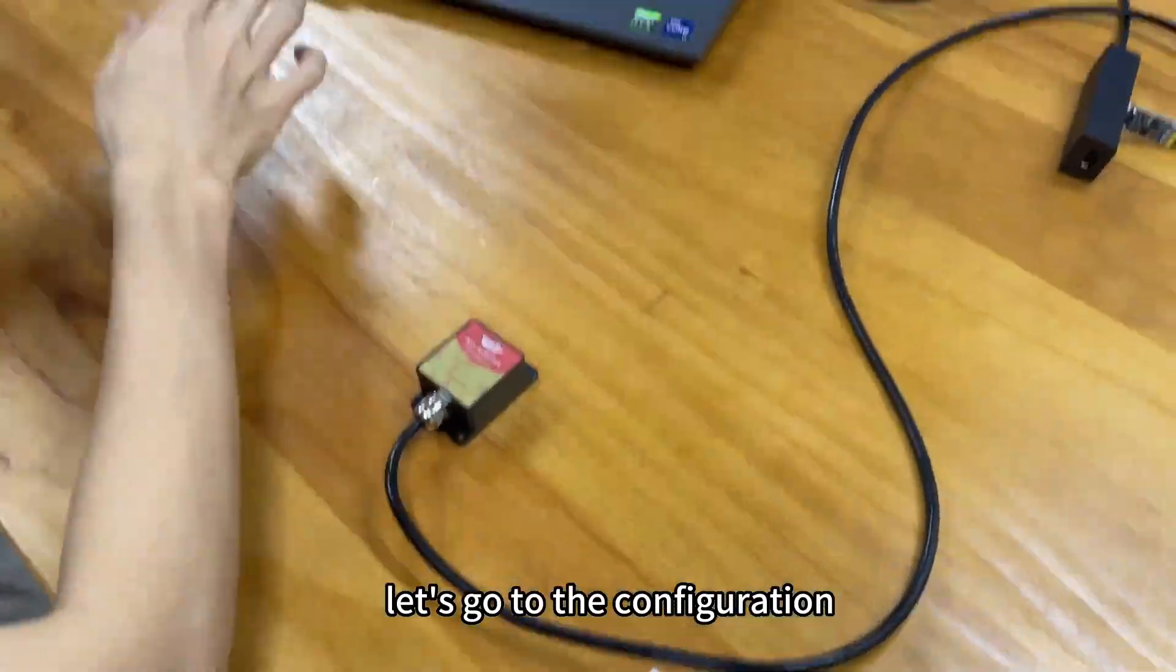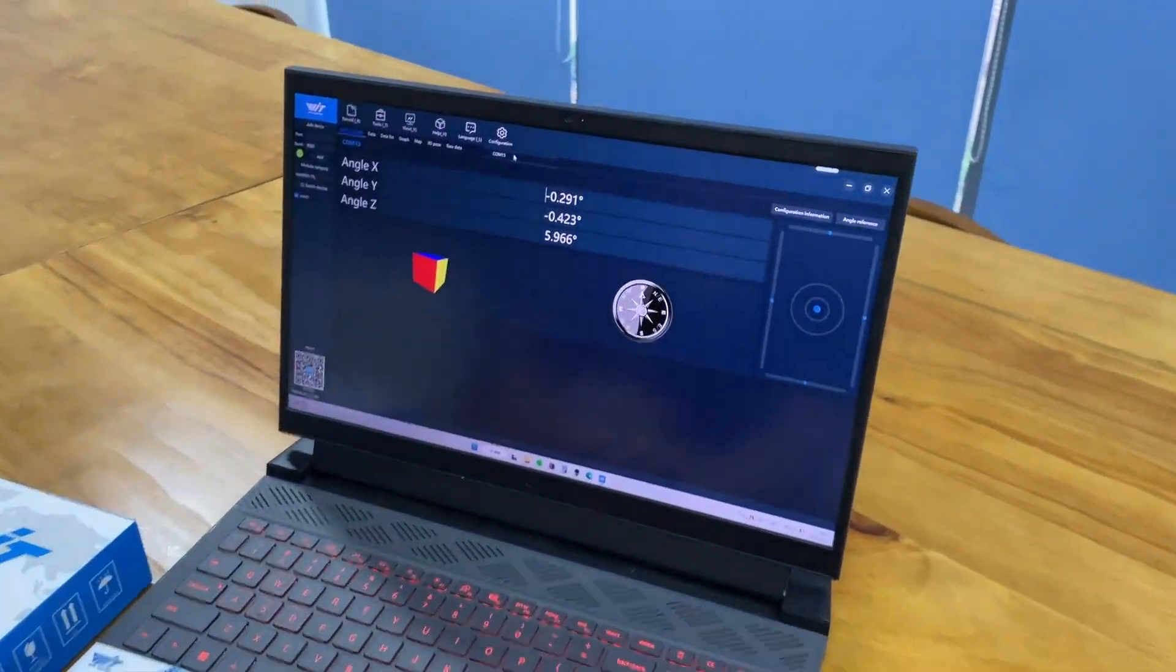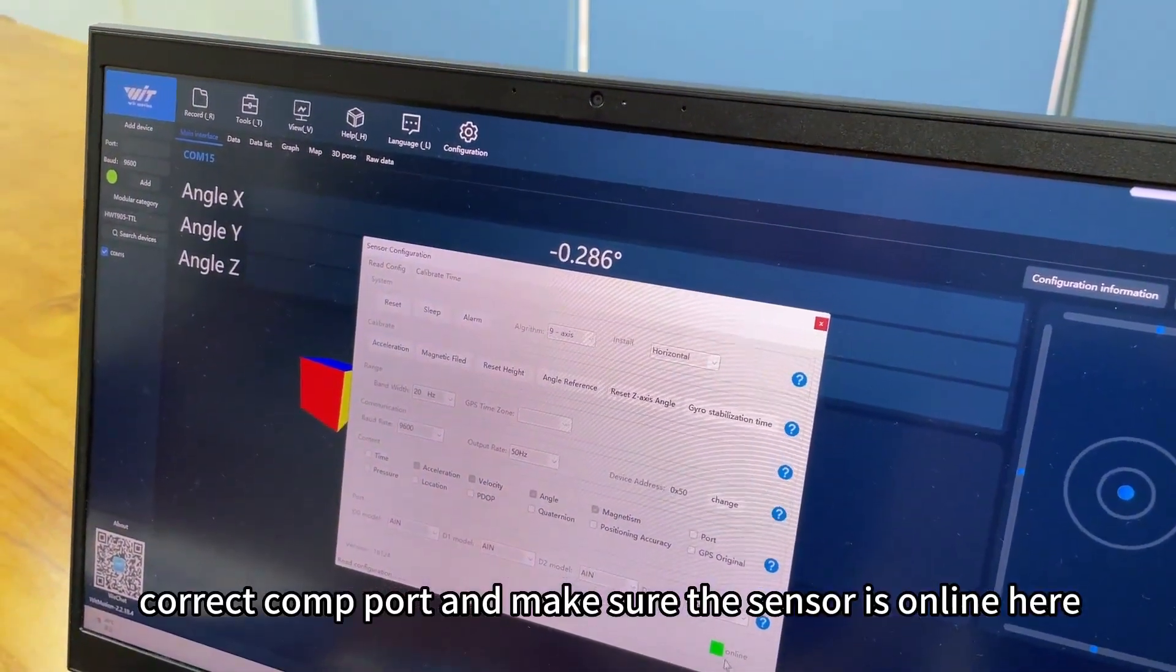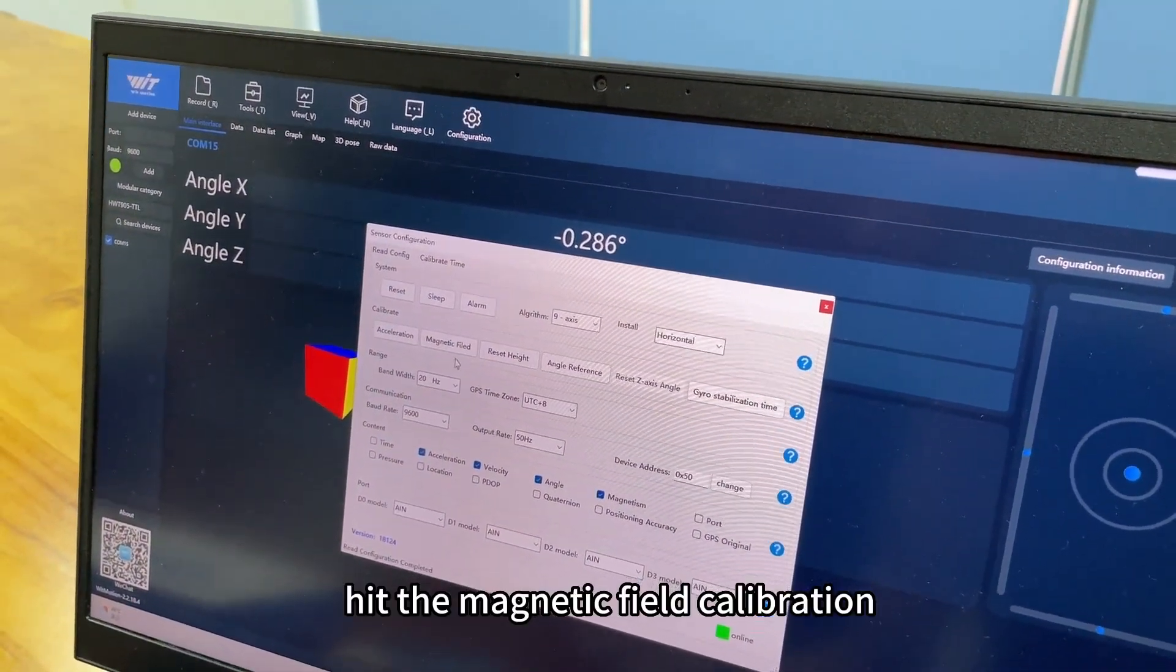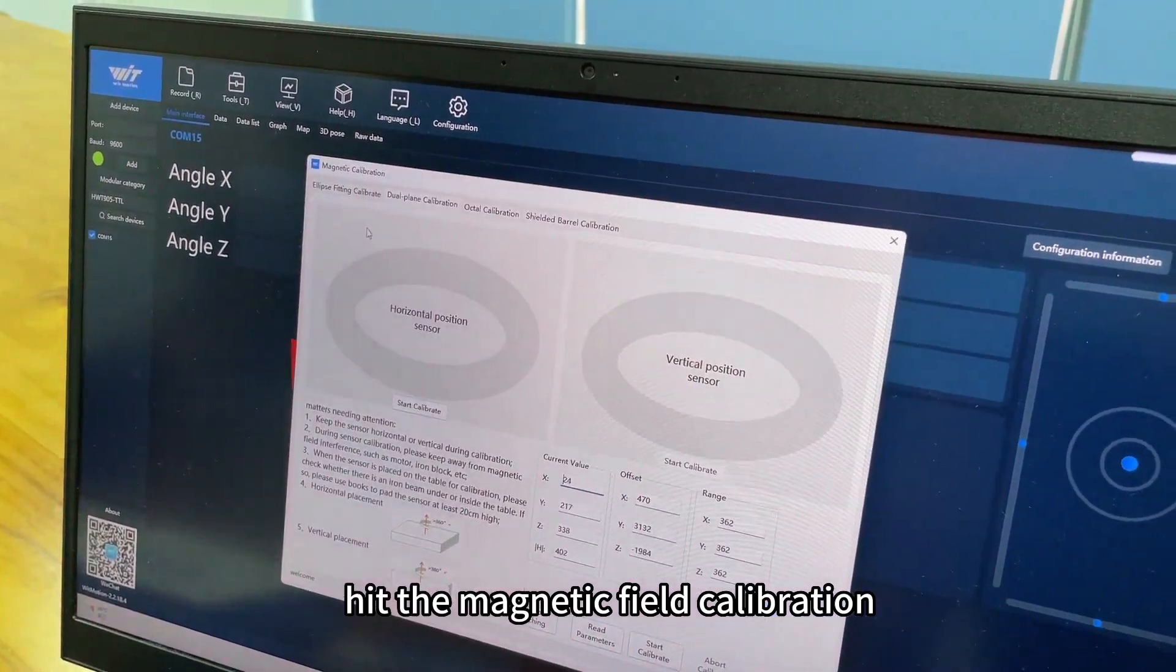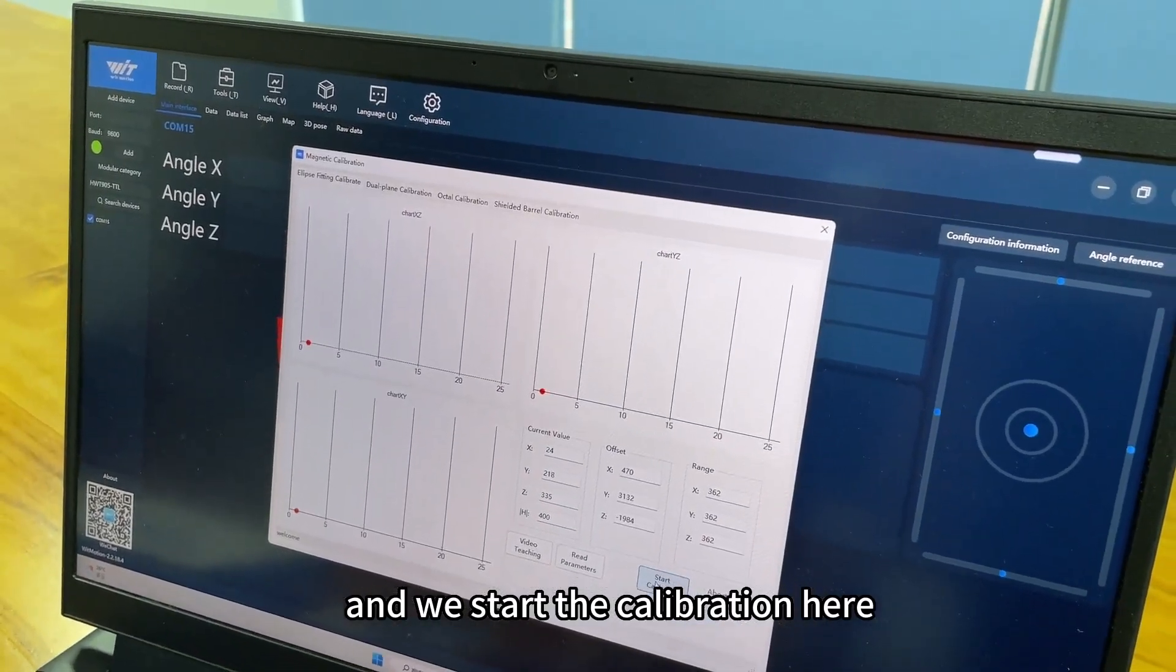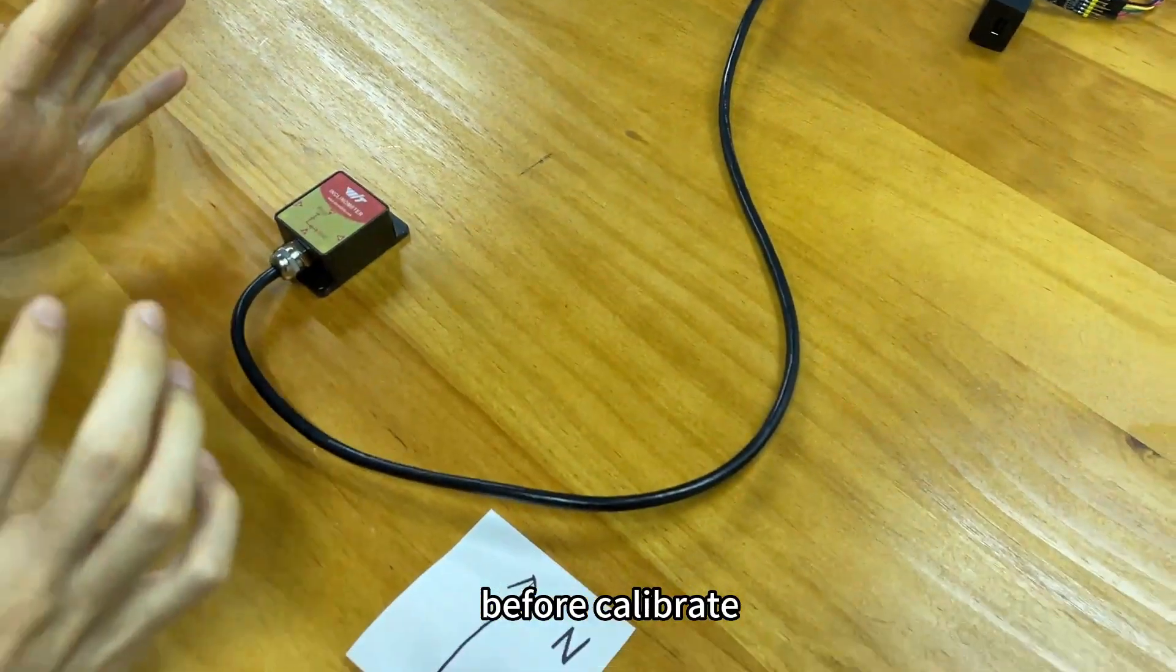That is the very key point. Let's go to configuration. We need to select the correct COM port and make sure the sensor is online here and hit the magnetic field calibration. We can try the ellipse filtering calibrate, and we start the calibration here.